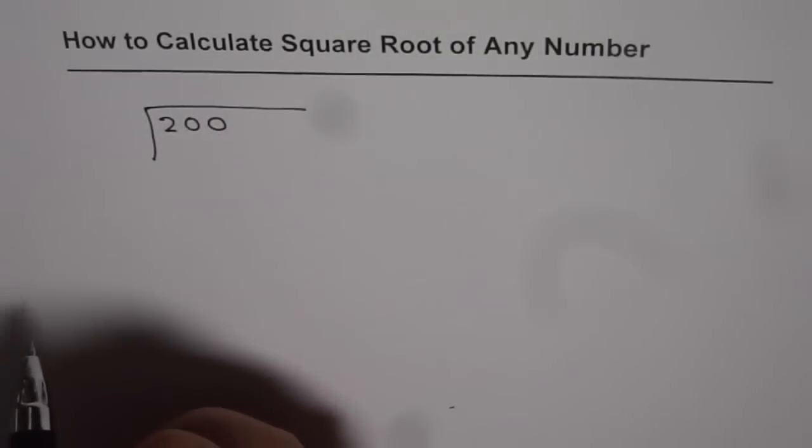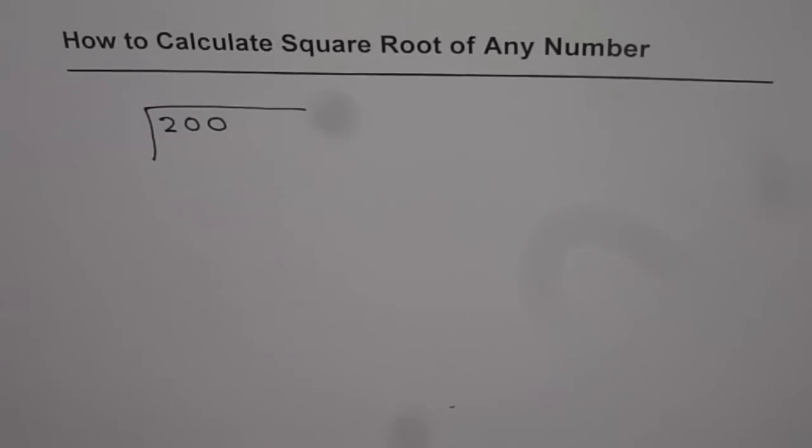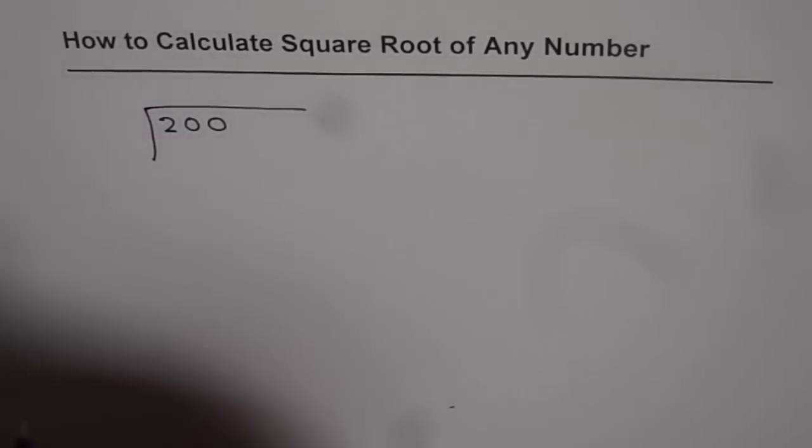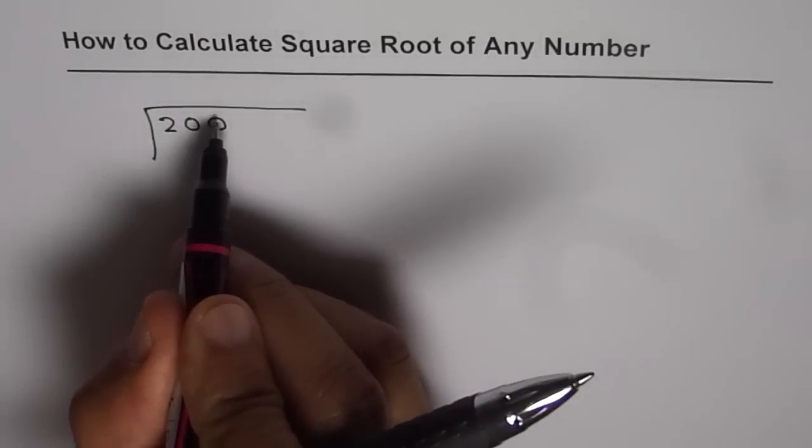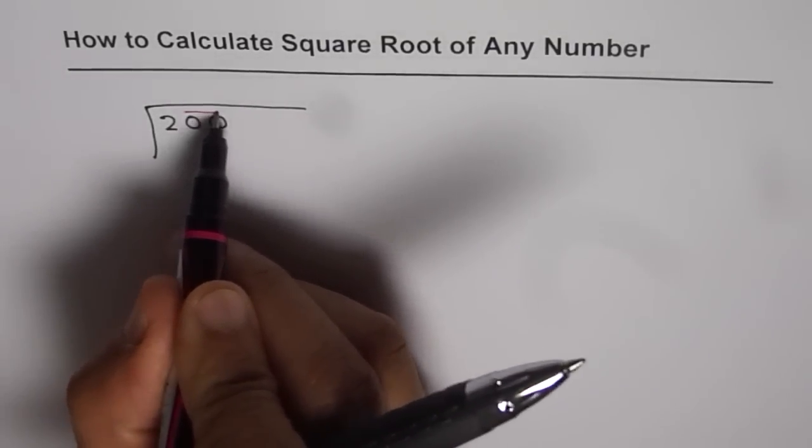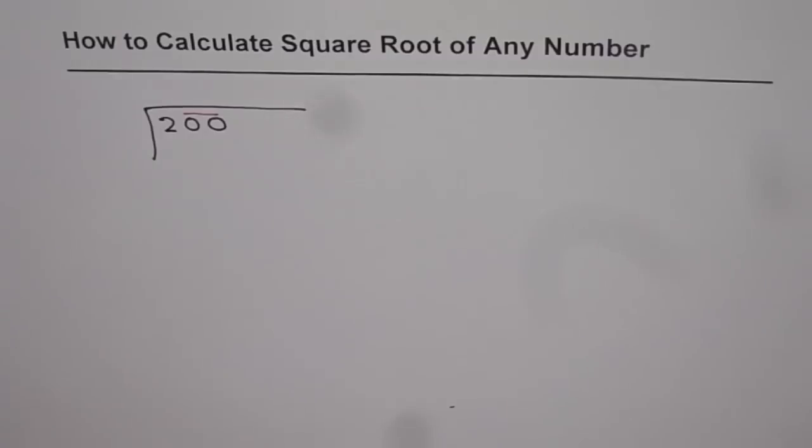As you know, in square root we are always multiplying the same number. So the technique is, whatever number is given to you, make pairs from left to right. So from left to right, two numbers, and then we are left with just one.